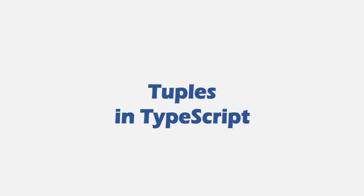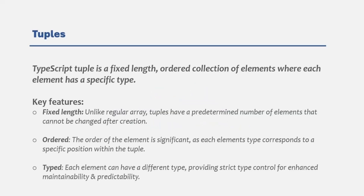TypeScript also introduces a new type called tuples, which we don't have in JavaScript. A TypeScript tuple is a fixed length, ordered collection of elements where each element has a specific type. This means you explicitly define the type of values that can be stored in each position of the tuple, ensuring type safety and clarity in your code.